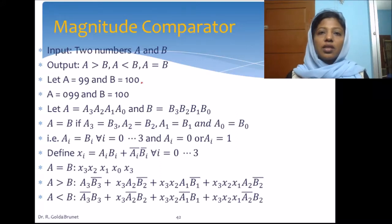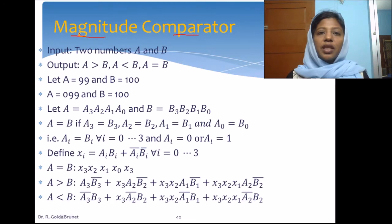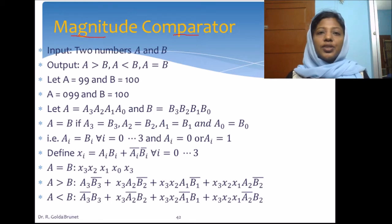We are now going to discuss the circuit for division, but it is out of the scope of the syllabus, so we have come to an end of the discussion of arithmetic operations available with the ALU. The logical operations in ALU are realized by logical gates, and the relational operation is realized by the magnitude comparator.